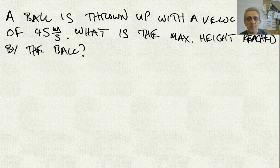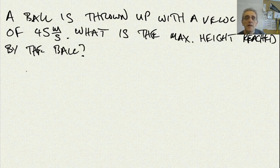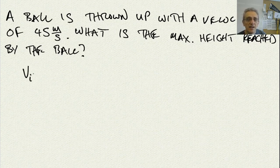We've got a problem. A ball is thrown up with a velocity of 45 meters per second. What is the max height reached by the ball? The first thing I see is that the initial velocity is equal to 45 meters per second.